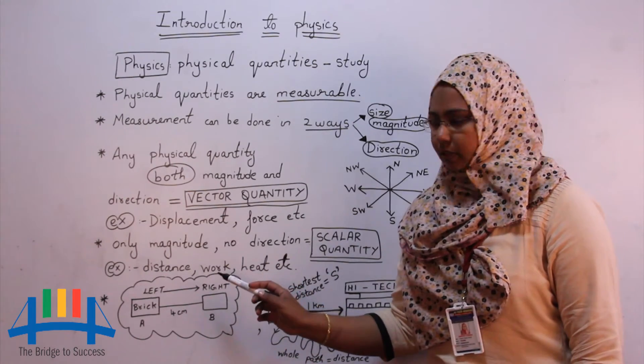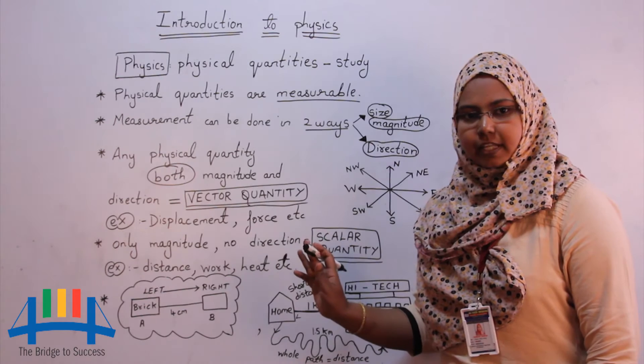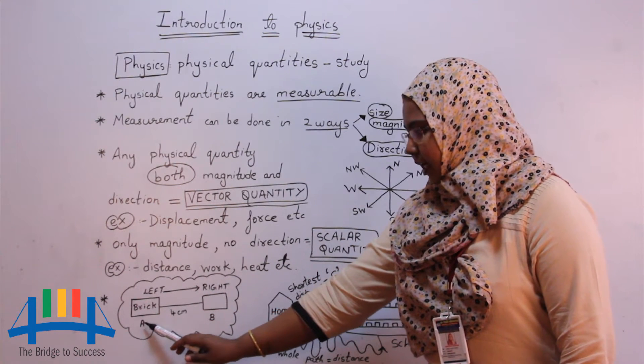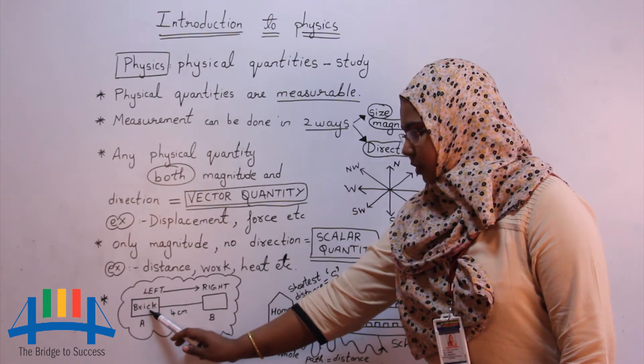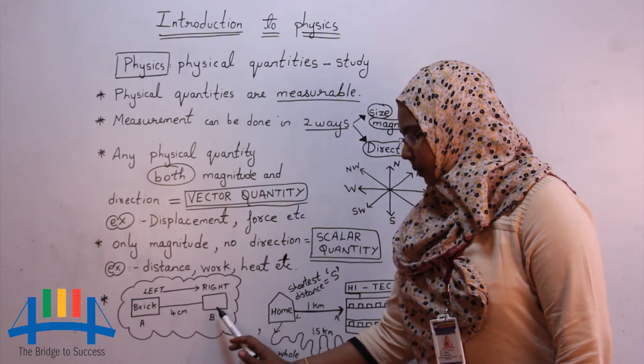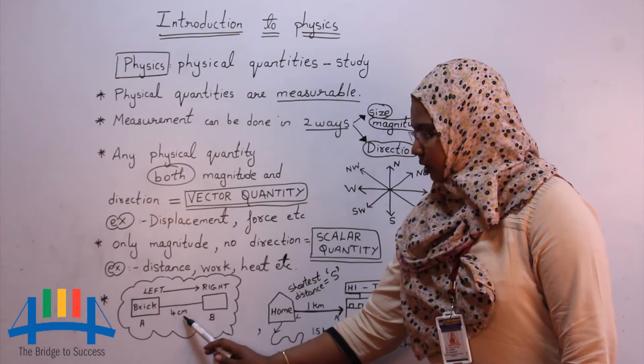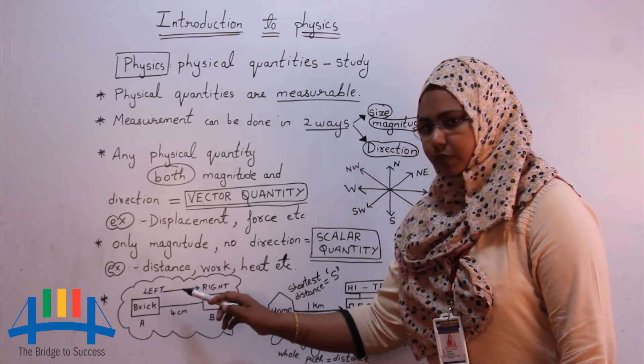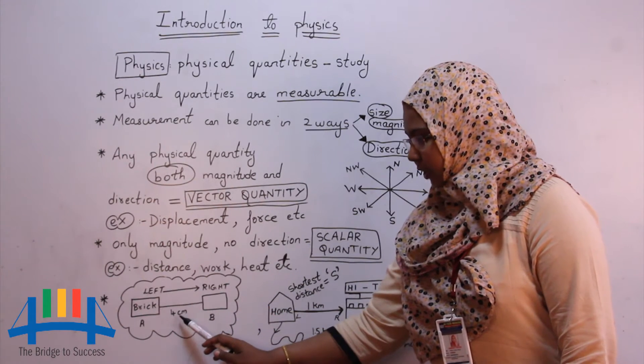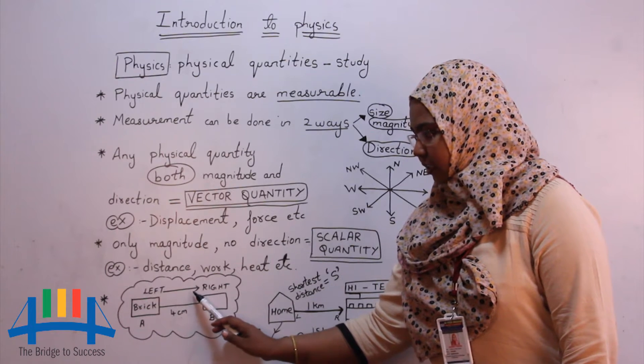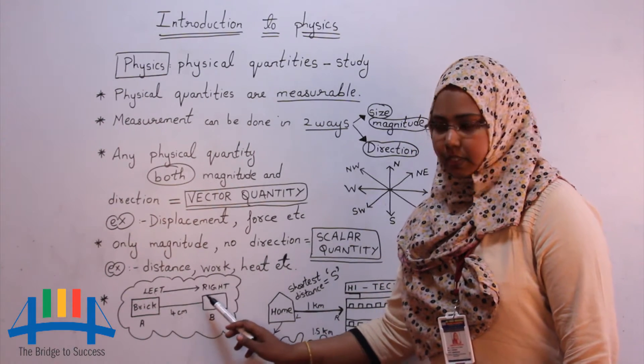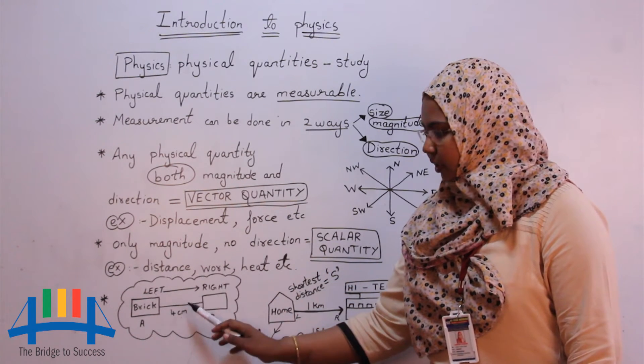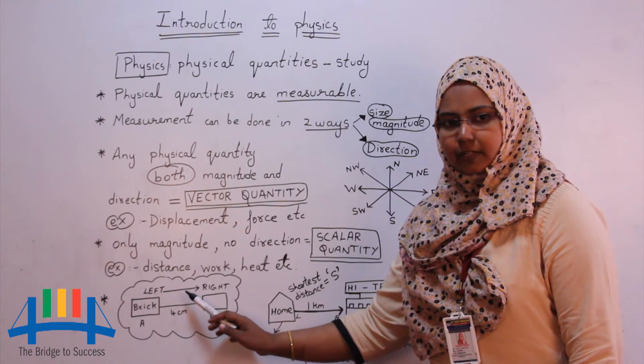Let me give you an example to understand better what is vector quantity and scalar quantity. Assume the brick at position A and we have moved this brick from A to B which is 4 cm and the direction is left to right. This figure gives you both, that is magnitude which is 4 cm and the direction left to right.